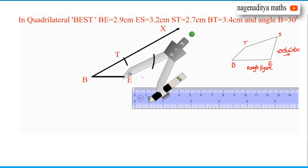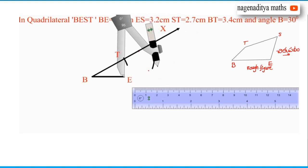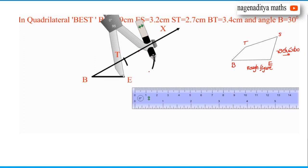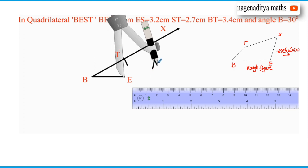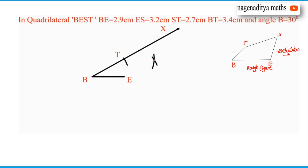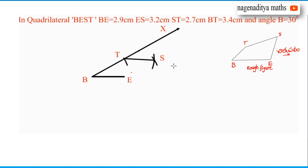We have to draw another arc from point E with radius ES equal to 3.2 cm. When we draw these two arcs, their point of intersection gives us point S. The two arcs correspond to ST and ES, and their intersection is labeled S. Then we join T to S and E to S.